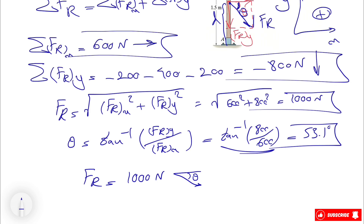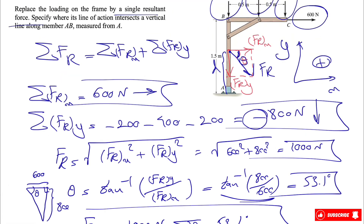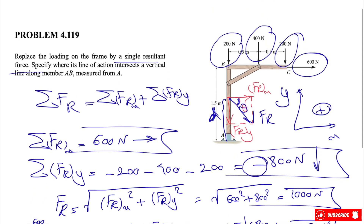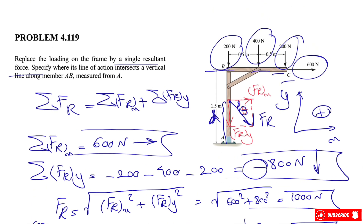All we care about is the right triangle: theta is that angle, with magnitude 800 on one side and 600 on the other, giving 53.1 degrees. That's the final answer for part one — a single resultant force. Now we move on to part two: finding distance d. For this we need to take moments about point A, where the sum of all moments of the four forces must equal the moment of FR about point A.